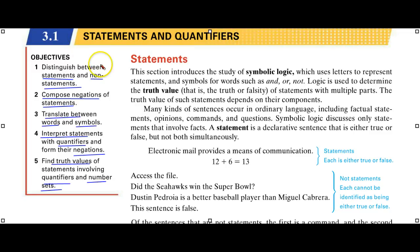We're going to distinguish between statements and non-statements, compose negation of statements (that is, their opposite - if true, false), translate between words and symbols (a couple of symbols in this chapter), interpret statements with qualifiers and form their negation. Then truth values and making truth charts involving qualifiers and number sets.